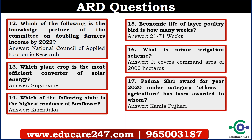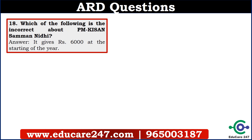The seventeenth question is: Padma Shri award for the year 2020 under the category of others — agriculture — has been awarded to whom? The answer is Kamla Pujari. The eighteenth question is: which of the following is incorrect about PM Kisan Samman Nidhi? You have to be careful, it is asking incorrect. The answer is: it gives 6000 at the start of the year — this is the wrong statement. It actually gives 6000 in 3 instalments of 2000 rupees each.